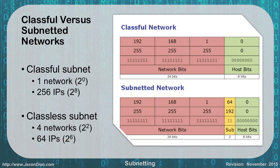When dealing with classful versus subnetted networks, a classful subnet uses 2 to the 0 borrowed bits, which is 1 — meaning one network. A class C gives you 2 to the 8th, or 256 IPs, minus 2 for network and broadcast, leaving 254 usable. With a classless subnet where you borrow two bits, you get 2 to the 2nd, or four networks, dividing the 256 total IPs into four pieces of 64 each. It's like cutting a pie — you can eat the whole pie yourself, or cut it into four slices and share.